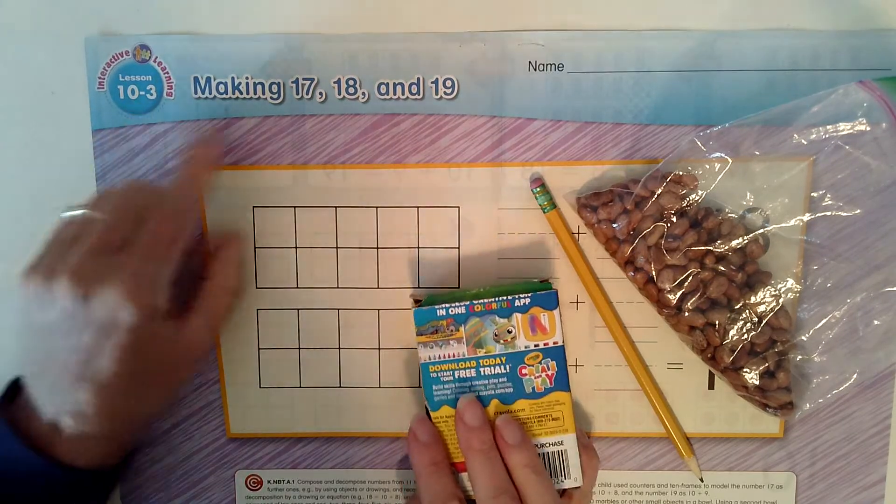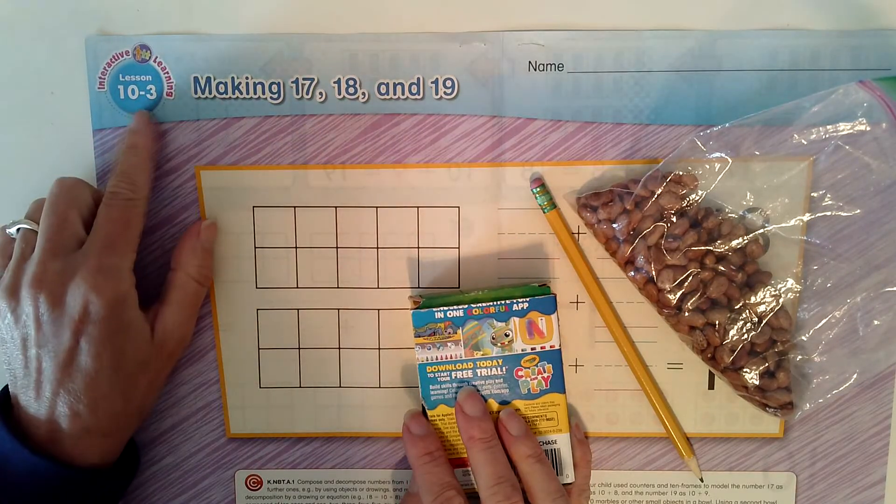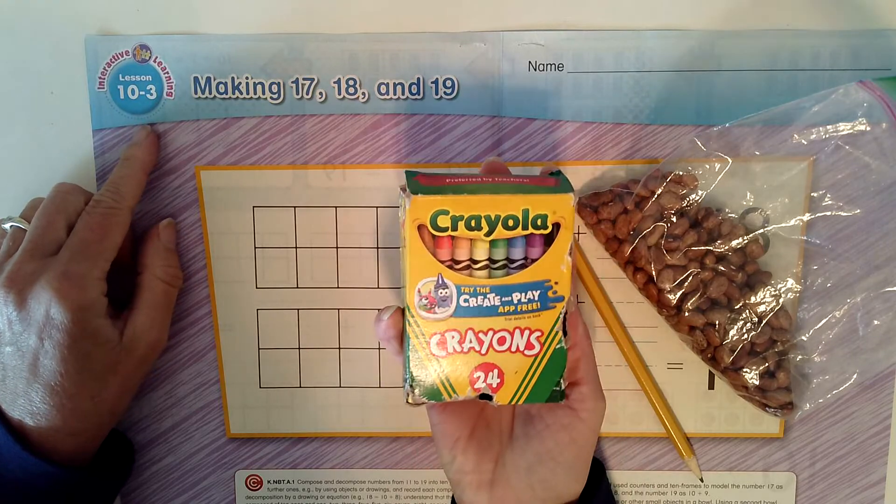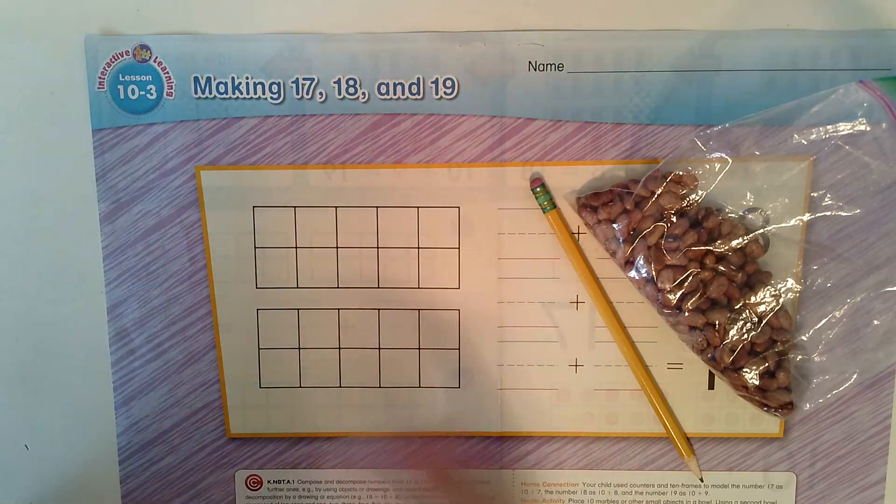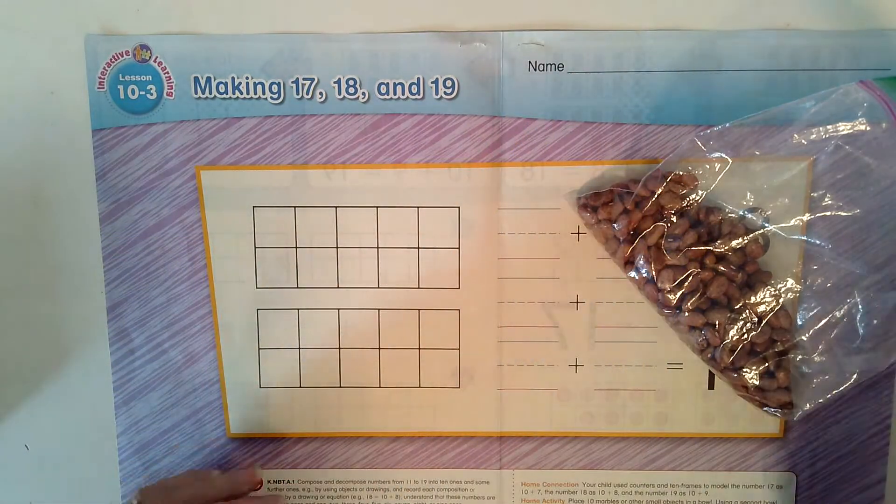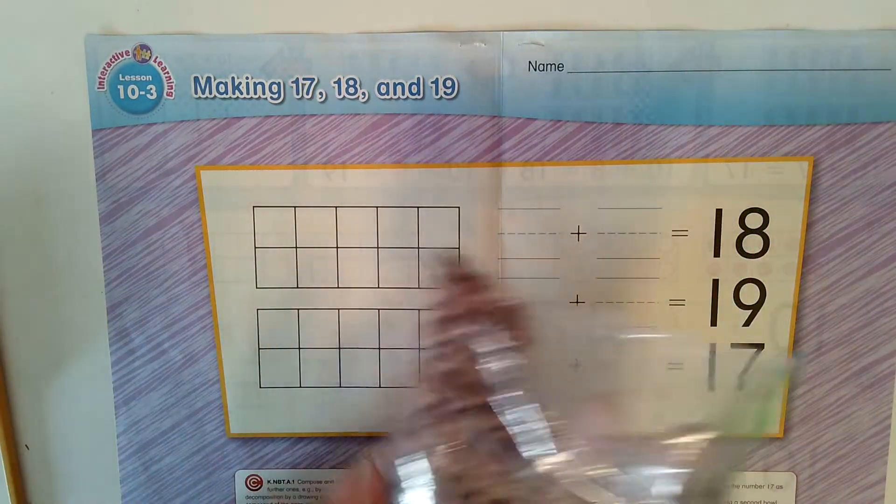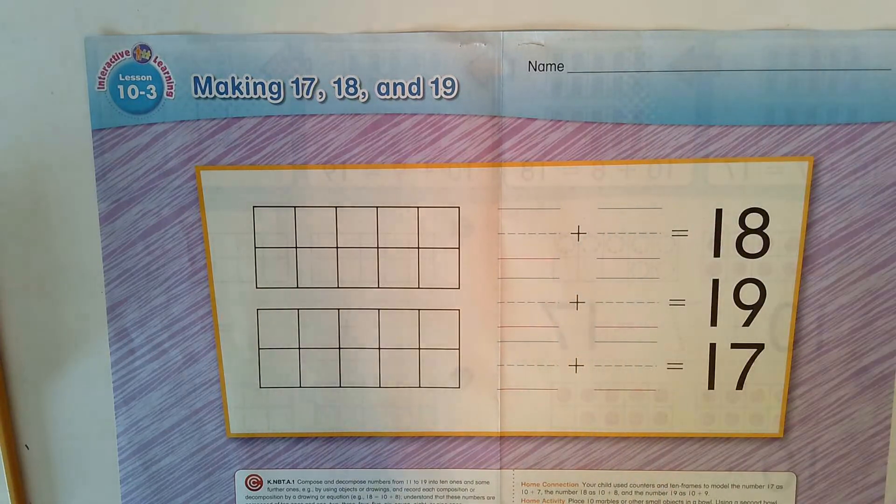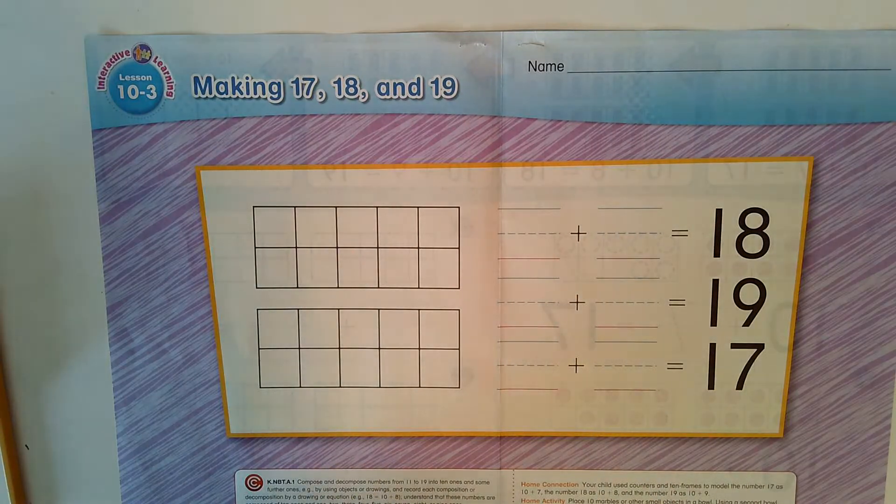For this lesson, you will need your Envision work mat 10-3, some crayons or a crayon actually, you can just pick one, a pencil, and some counters. Again, I like to use the beans. So pause the video, gather your supplies, and then come on back when you're ready.